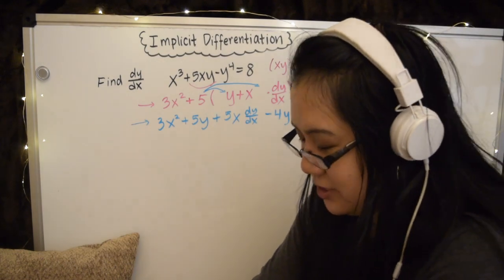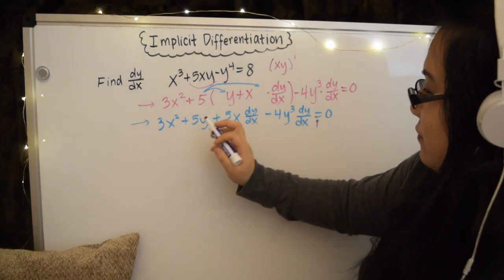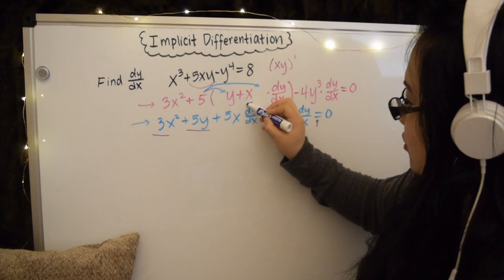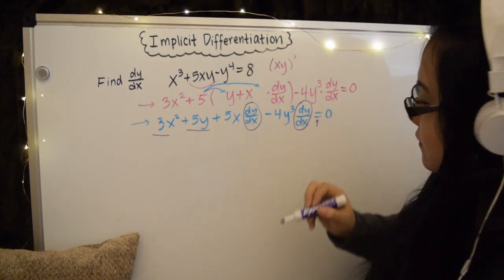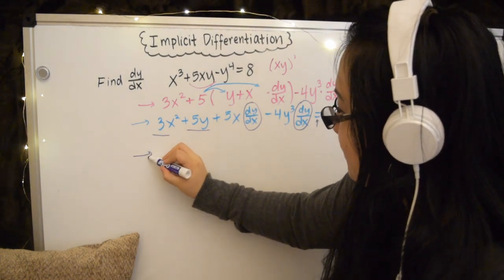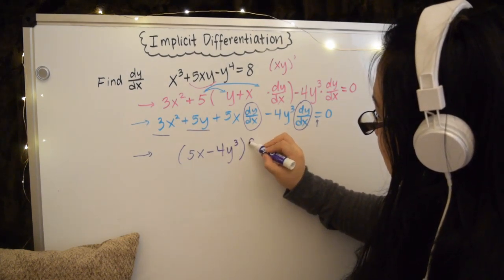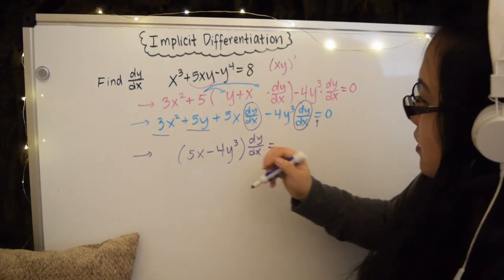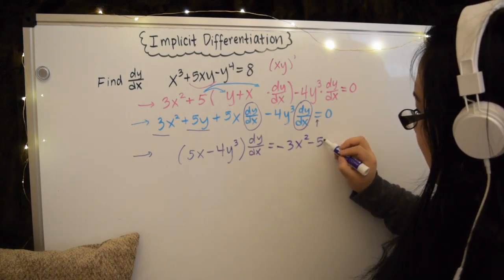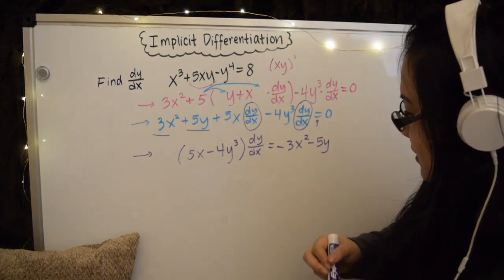Okay, so I just expanded this out. And now remember, we're going to try and keep all the dy/dx terms on this side of the equal sign. So there's that equal sign. And move everything else that way. So this and this will go over here. And then for these, I will, remember I'm trying to solve for dy/dx. So I'm just going to go ahead and factor out these coefficients. And then remember to move this over here. I do a minus 3x squared minus 5y.